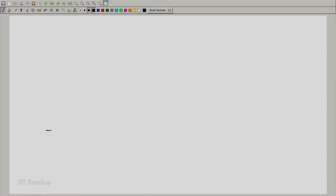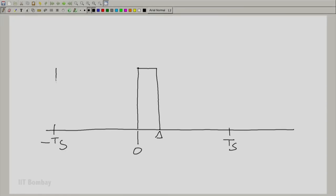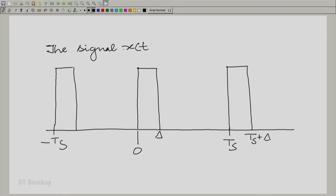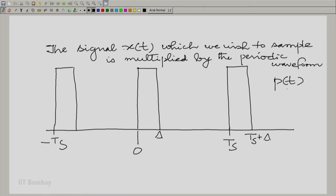We said that if you had this train of non-ideal pulses, pulses that are not quite impulses, but which last for an interval capital delta in the whole sampling interval of Ts. So in every interval of Ts, you have this pulse. The pulse lasts for an interval of capital delta. Essentially what you are doing is to take a band limited signal or the signal that you want to sample and multiply it by this periodic waveform. We call this periodic waveform P of T, the train of pulses now, not impulses.